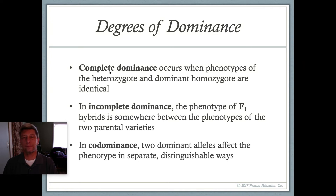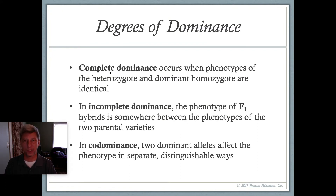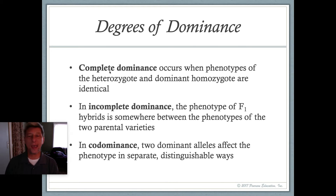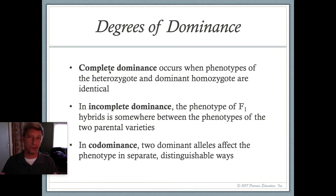The first item on that list is degrees of dominance — when alleles are not completely dominant or recessive. Complete dominance occurs when the phenotypes of the heterozygote and the dominant homozygote are identical. So big P big P and big P little P give you the same phenotype — that's what we talked about in 14.1 with Mendel's pea plants.